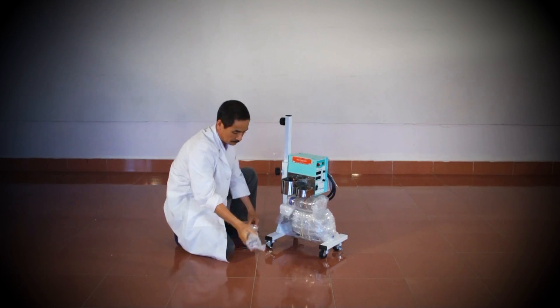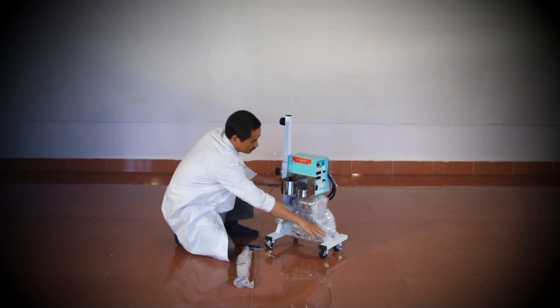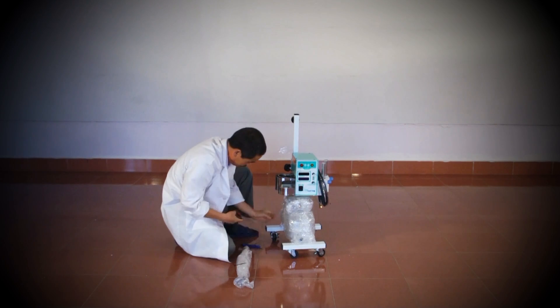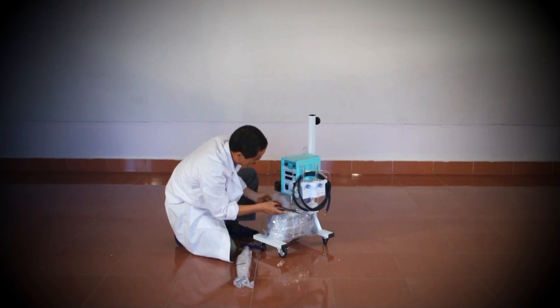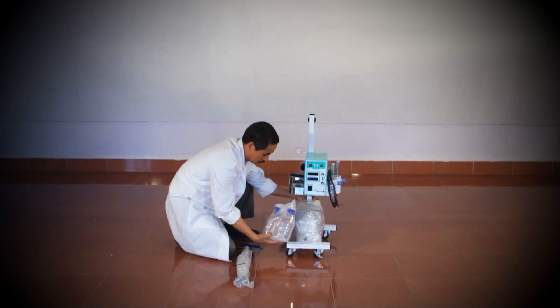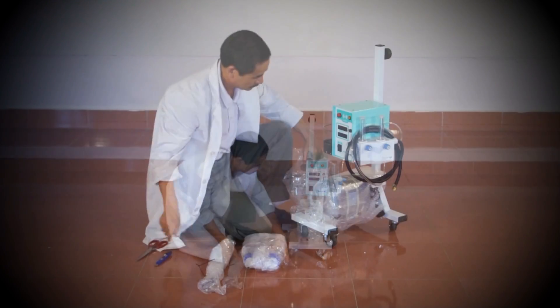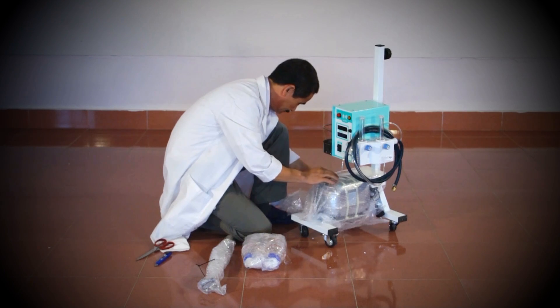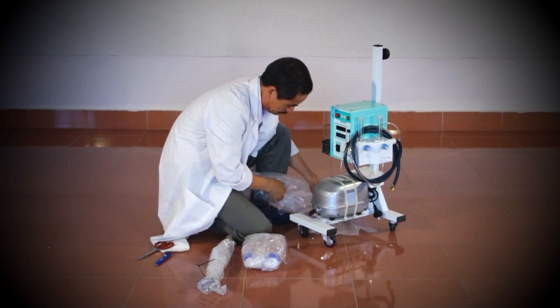Begin by unpacking the components attached to the CPAP main unit and place them to one side. You can remove the bubble wrap later. Now remove all the straps and clamps holding the wires and tubes, as well as the bubble wrap protecting the air compressor.